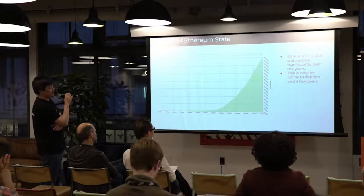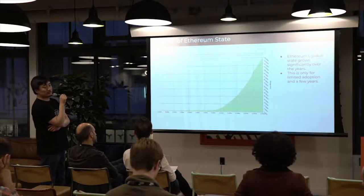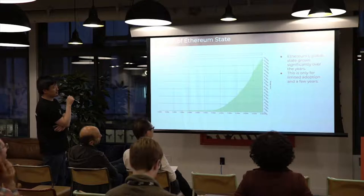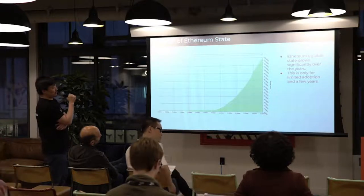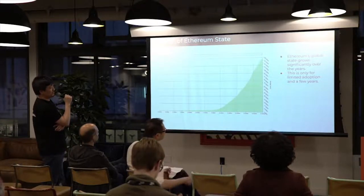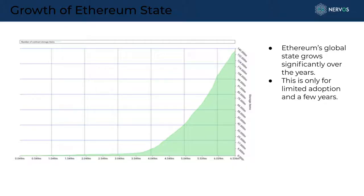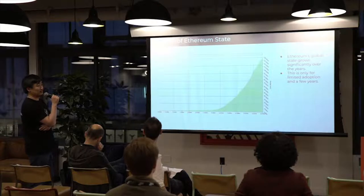If we don't bound resources, over time only supercomputers will be able to run full nodes — and that's a problem. Looking at the growth of Ethereum state, the recent data shows around 10 gigabytes of global storage. From the shape of the chart, it has grown significantly over the years, and we've only seen Ethereum for four or five years without mainstream adoption yet. We can only imagine how much this will grow with mass adoption.